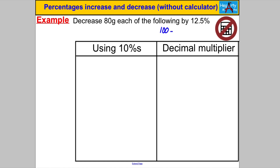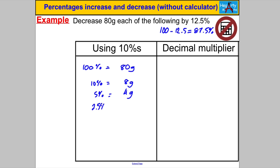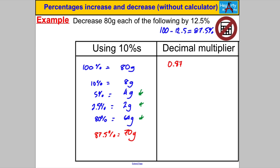Decrease 80 grams by 12.5%. 100% − 12.5% = 87.5%. 100% = 80g, 10% = 8g, 5% = 4g, 2.5% = 2g, 80% = 64g. To get 87.5%: 80% + 5% + 2.5% = 64g + 4g + 2g = 70g. Using decimal multipliers: 0.875 × 80 = 70g.